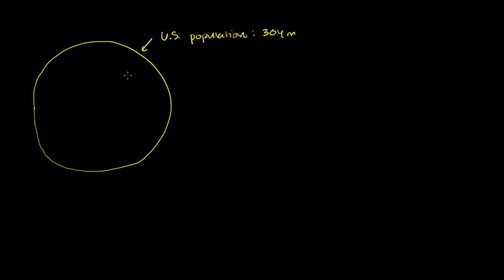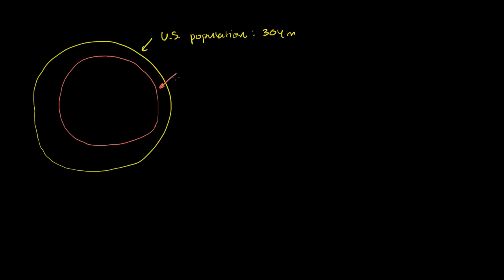Not all of those 304 million people are capable of working, including my 2.5-year-old son or my newborn daughter. So when you think about unemployment, you want to think about the percentage of people that are actually old enough to work, that can actually be employed theoretically. So let's take a subset of the US population — who's essentially an adult, who's working age. This subset is 16 years and older — people who can legally work.